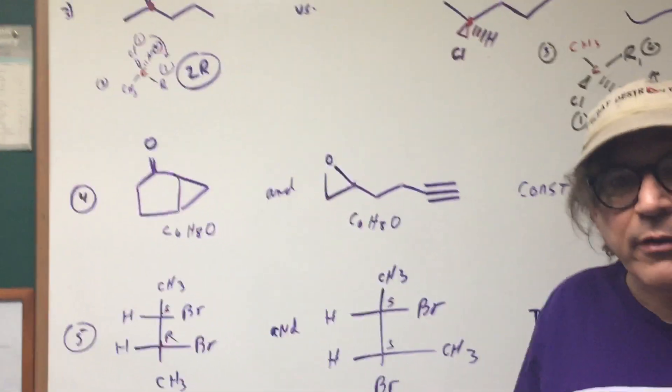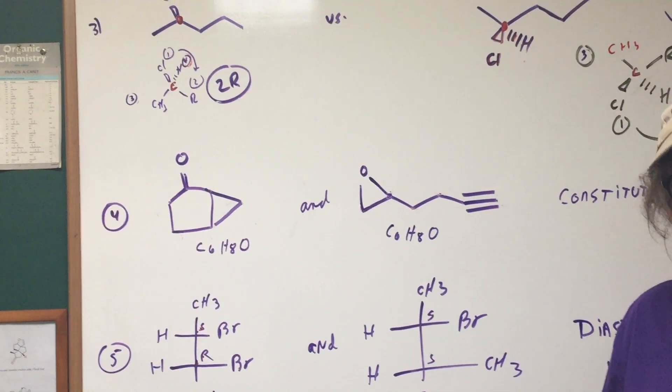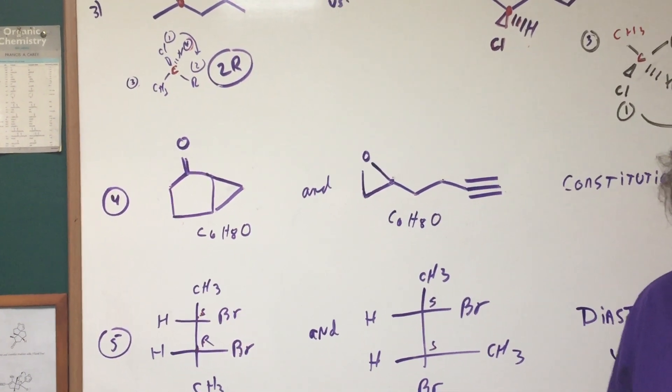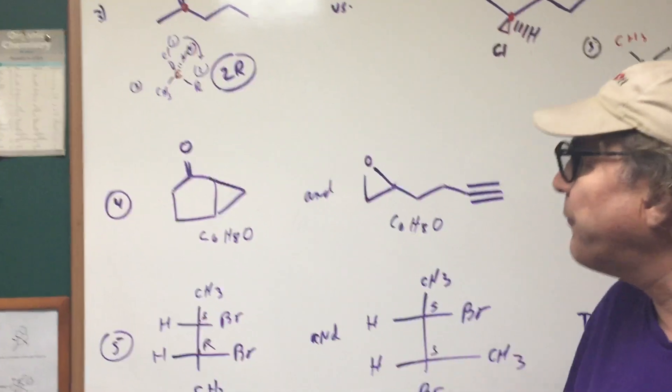Problem number four, they look very unlike each other. They look very different. But they're not stereoisomers, because I've changed the positions. But the trick is, let's get the molecular formula.